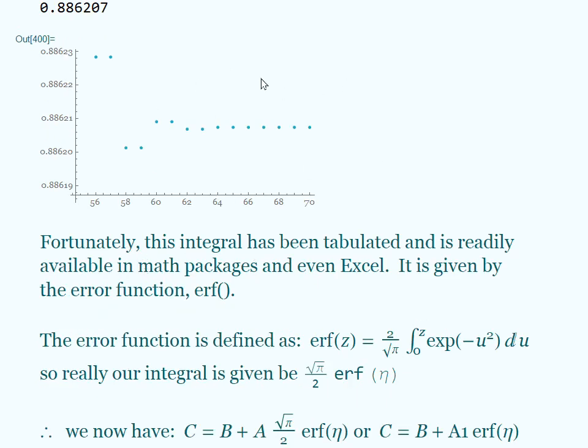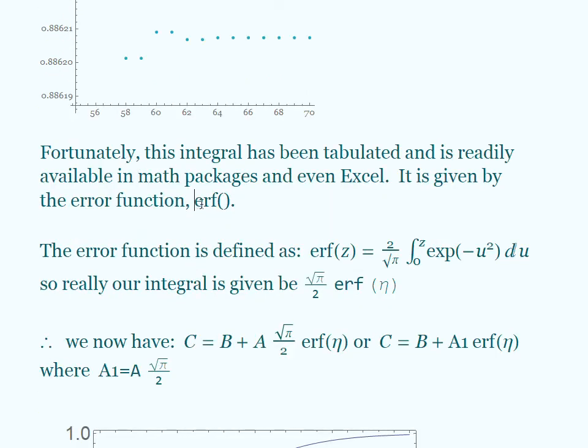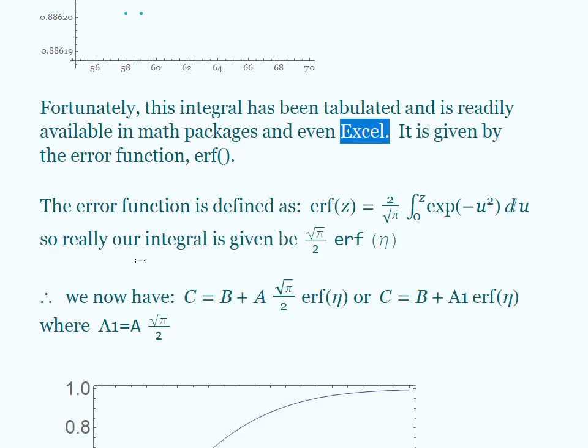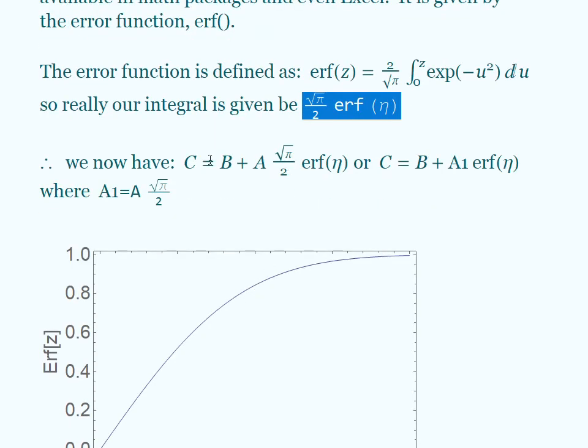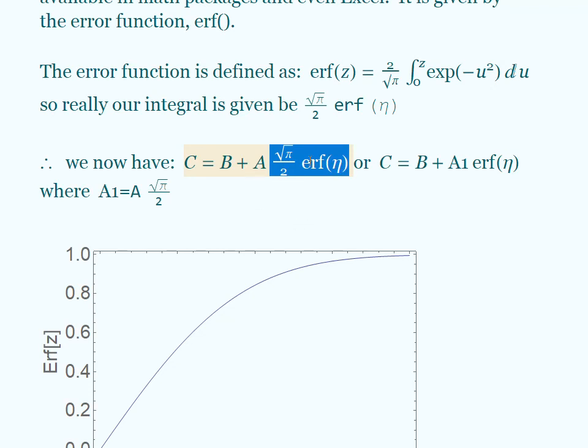Fortunately we don't have to do that. We can use the error function that's built into a lot of packages, some calculators, and it's in Excel. It's just ERF in Excel. Now the error function actually is defined by the integral I just showed you, but it does have a constant out in front. That's just the way it's been defined. So really, instead of just substituting error functions straight in, we need to substitute in the square root of pi over 2 times the error function to get rid of this term. So that messy integral that we had after our constant A is now just simply square root of pi over 2 times the error function. And this we can just put in a value in Excel for example, and it will kick us out the value for the error function.